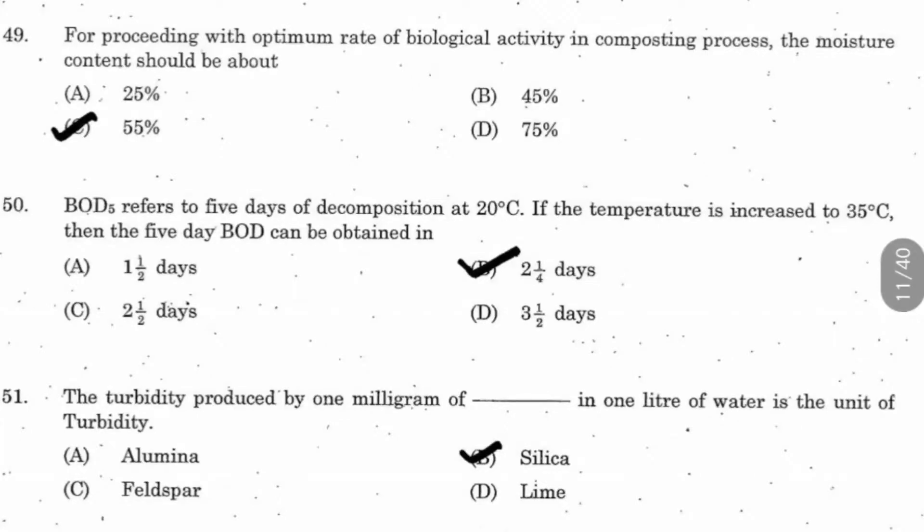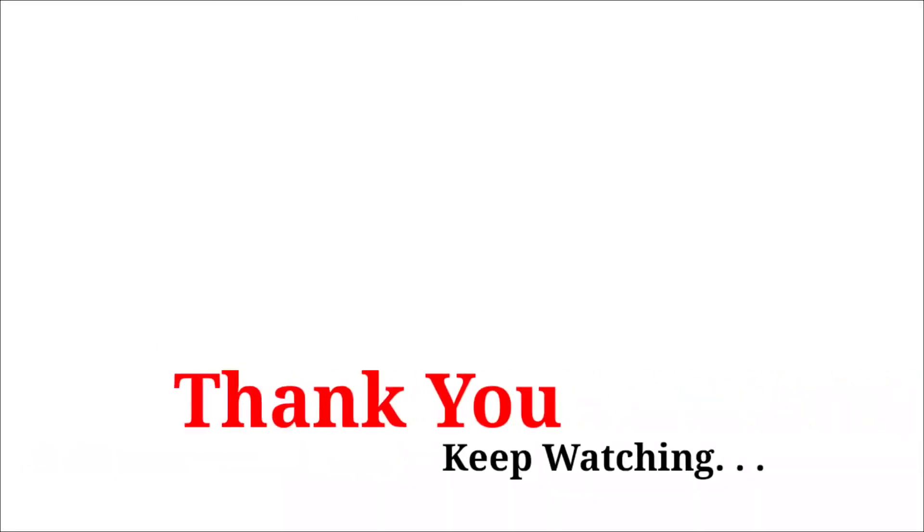Question 50: BOD5 refers to 5 days of decomposition at 20 degree Celsius. If the temperature is increased to 35 degree Celsius, then the 5 day BOD can be obtained in how many days? Normally, BOD at 20 degree Celsius for 5 days is the standard. When temperature differs, it varies. For example, at 35 degree Celsius, we increase temperature. At 30 degree Celsius, it's 3.25. At 35 degree Celsius, 2.25 is the answer.